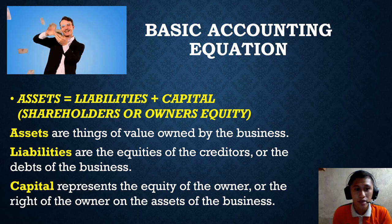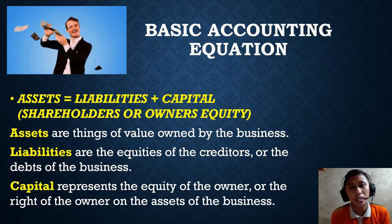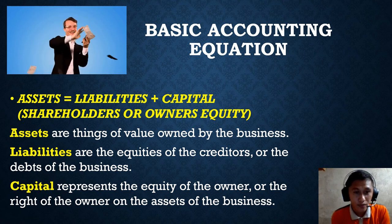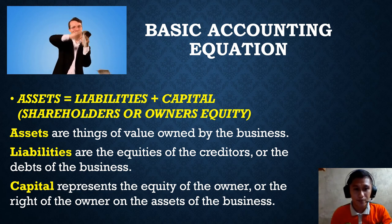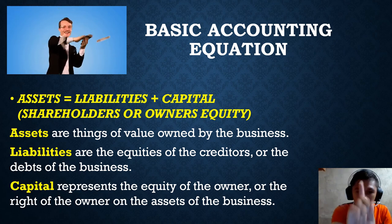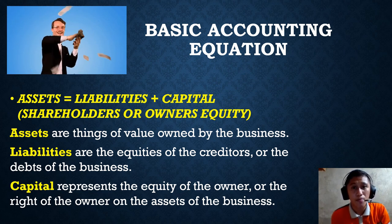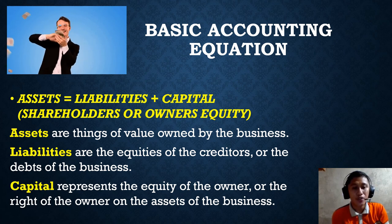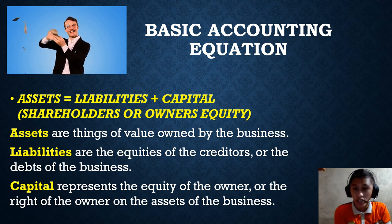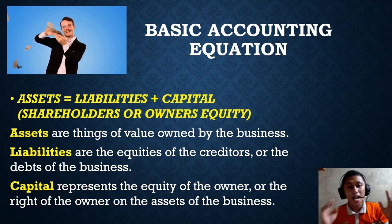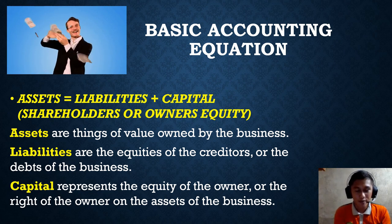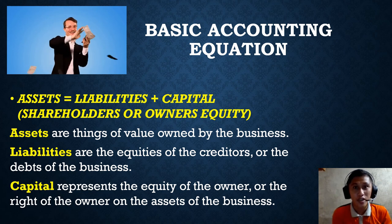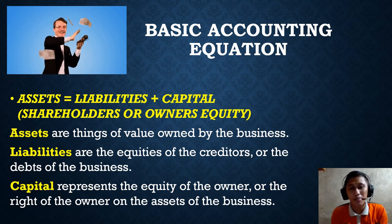To make the equation easier to understand: imagine you are living in a house. Assets are all the properties you own overall. Liabilities are the debts out of those properties. Capital is the sure portion of those assets that belongs to the owner. Assets = Liabilities + Capital. If you have questions, comment in the comment section below.